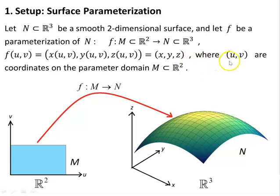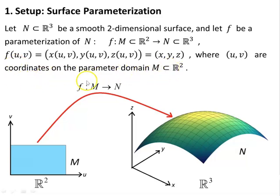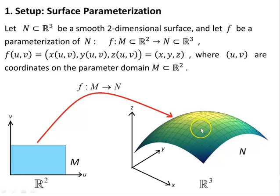Now F of U, V equals (X(U,V), Y(U,V), Z(U,V)) equals (X, Y, Z), where U and V are the coordinates on the parameter domain M contained in R2. And F is a map from M to N, taking points in M and mapping them to points in N.